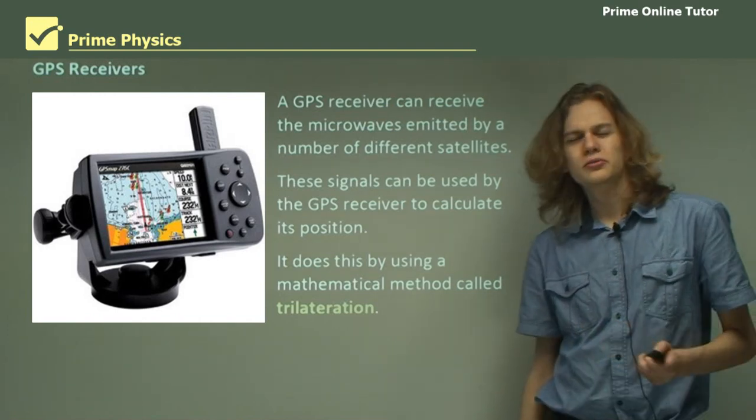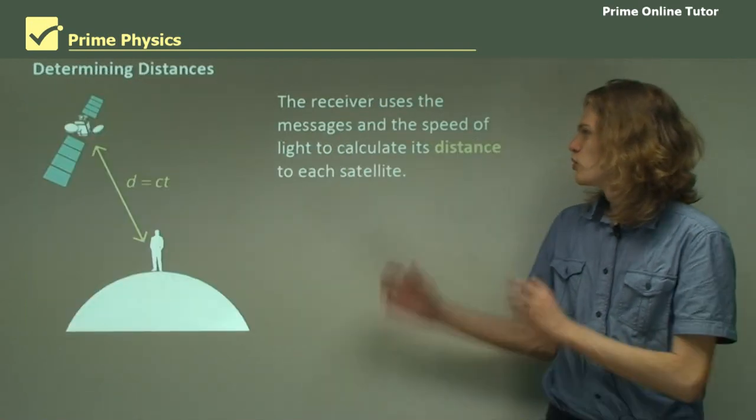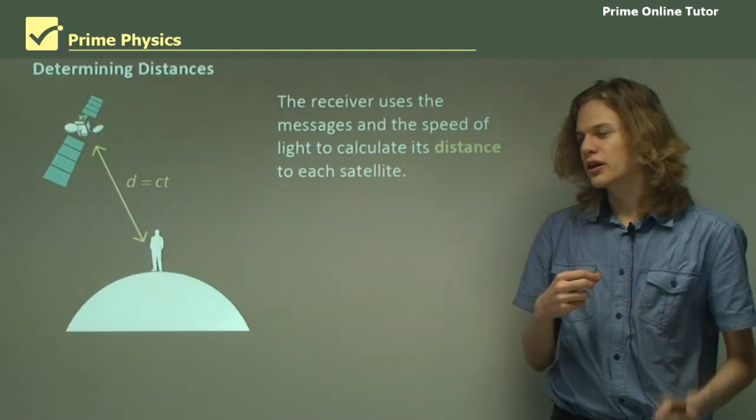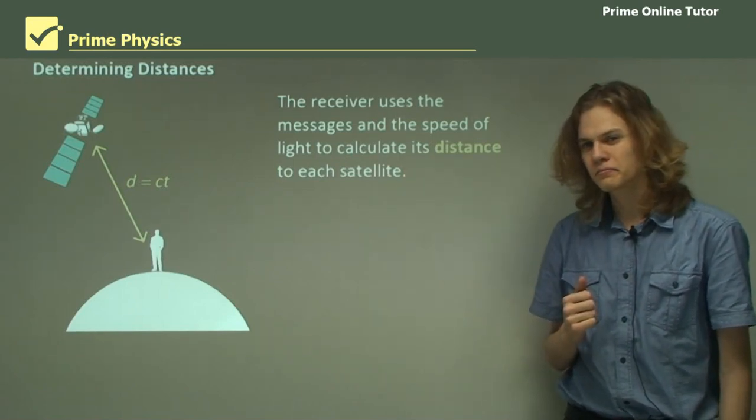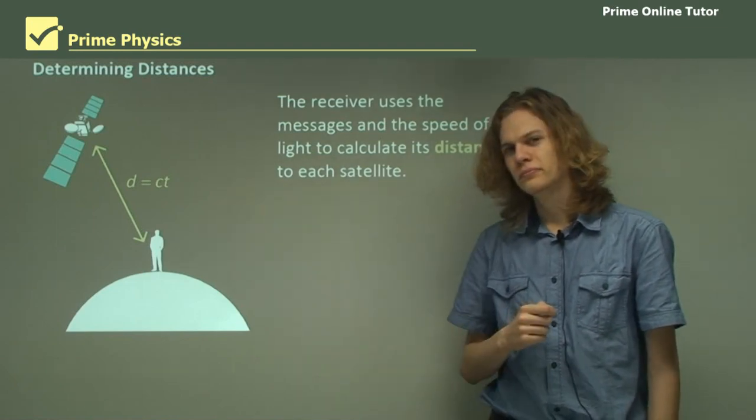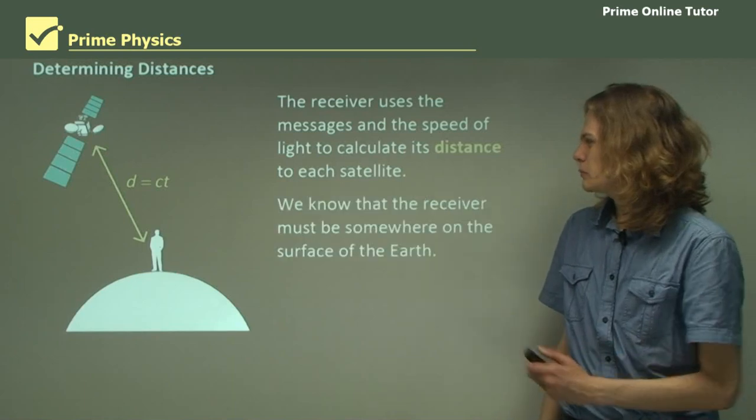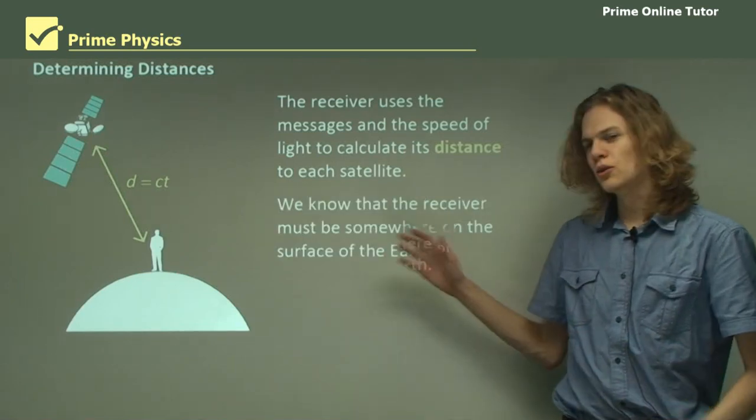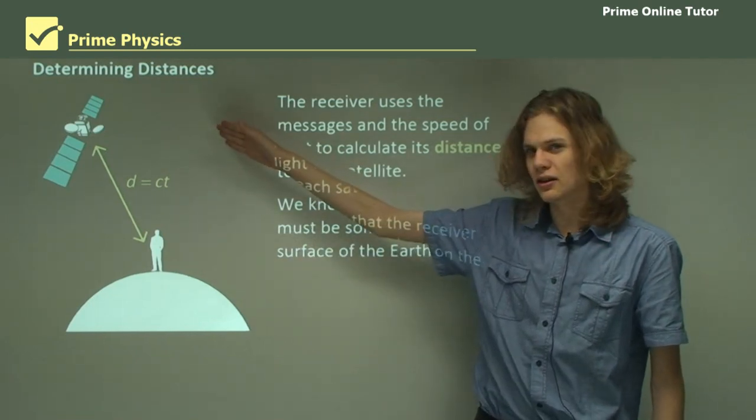So why are the time signals useful? The receiver uses the messages to calculate the distance to each satellite. We can see the equation to do that with over here. Does it seem familiar? We know that the receiver has to be somewhere on the surface of the Earth, and we know the exact location of the satellite and the time at which the satellite sent its signal.